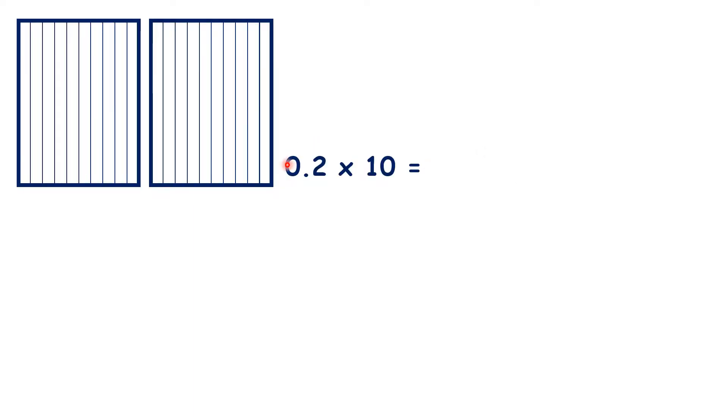To make sure that we understand this, let's show what we're doing with 0.2 times 10. We know that multiplication is repeated addition, so let's add 0.2 10 times.